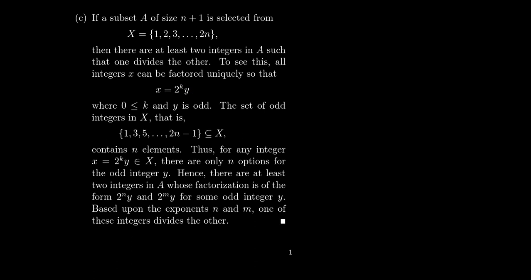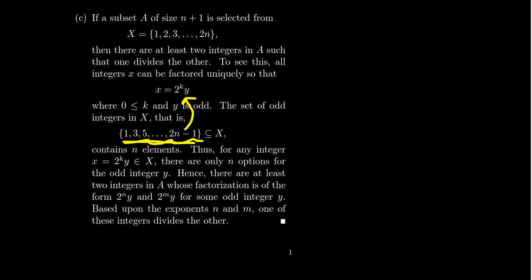Let's look at the set of odd integers contained inside the set X: 1, 3, 5, up to 2N minus 1. Clearly, 2N is even, so 2N minus 1 is odd. These odd numbers represent all of the possibilities for Y. Because any X chosen from the set could itself be an odd integer with no powers of 2, or if there is a non-trivial power of 2, Y would still have to be a smaller odd integer. So all of the choices for Y are going to be one of those odd integers.